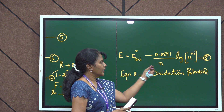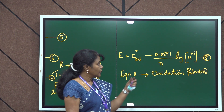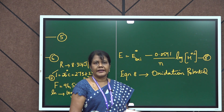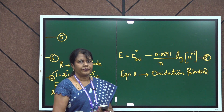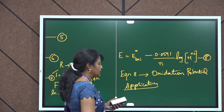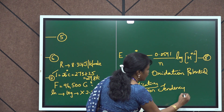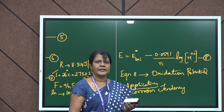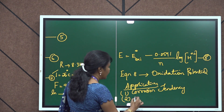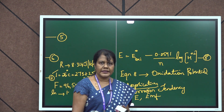Once the E naught value is known and the number of electrons involved in a reaction as well as the concentration of the electrolyte are known, we can easily find out the electrode potential. This plays an important role in the calculation of electrode potential for various metals. Applications include: corrosion tendency — based on the E naught value we can find out the corrosion tendency of various metals — as well as electrode potential calculations and EMF of a cell. These are the applications of the Nernst equation.